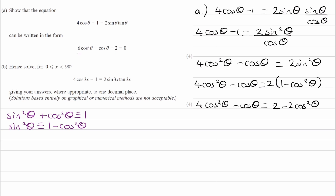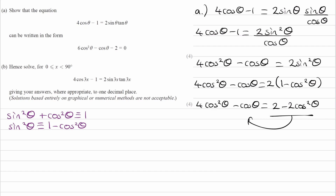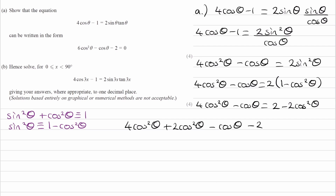So we want to have 6 cos squared theta, so positive 6. I will bring this minus 2 cos squared theta to the left hand side — bring everything on the right hand side to the left. Subtracting from both sides, we end up with 4 cos squared theta plus 2 cos squared theta minus cos theta minus 2, which equals 0. That is 6 cos squared theta minus cos theta minus 2 equals 0. And that's part A done.